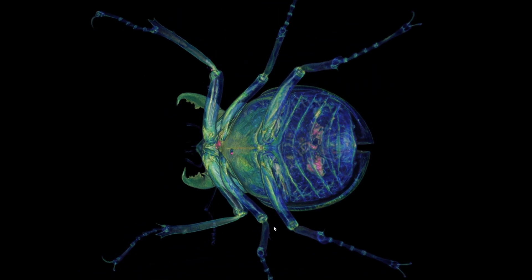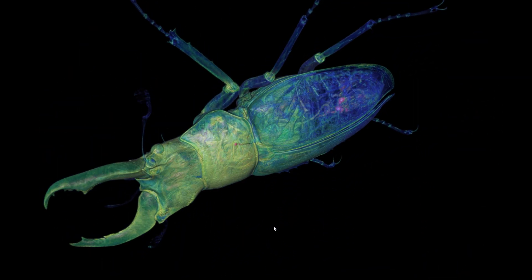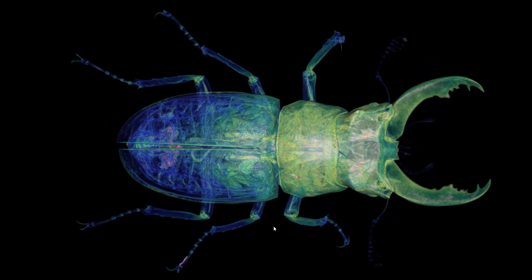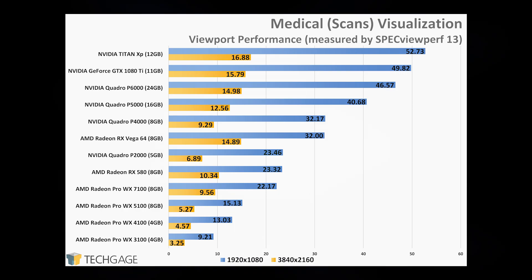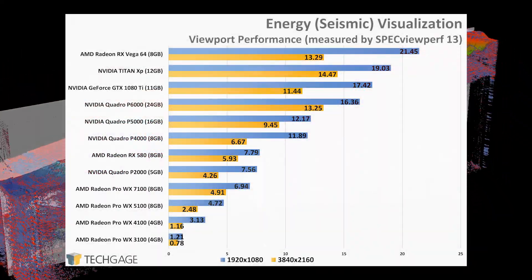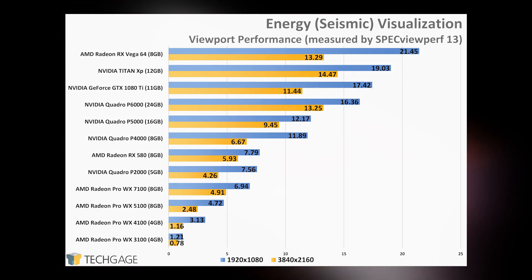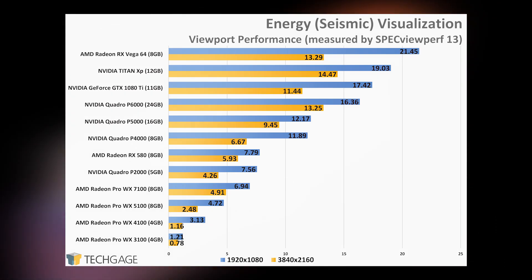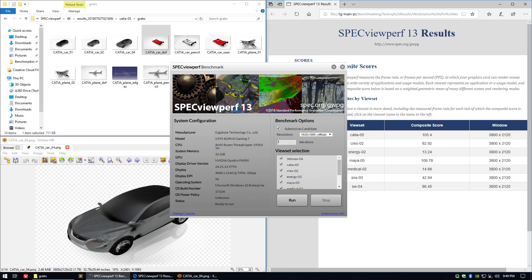Now for something a little different. The final two tests cater to visualization software used by researchers, doctors, and others to interpret mass amounts of data gathered through many different techniques. The amount of data being churned through to generate accurate visualization on screen is immense. The medical test follows the 3ds Max and Maya ones nicely by scaling almost identically — NVIDIA is on top, and once again sees its lower-end Quadros outperforming the entire AMD stack we have on hand. The Quadro P4000 and Vega 64 perform similarly, with the Polaris-based Radeons falling behind most of NVIDIA. Thankfully, the energy results give us something interesting — AMD's RX Vega 64 dominates. The Titan XP's 12GB of memory seems to gain it a bit of an advantage at 4K, but overall the Vega 64 performs exceptionally well in comparison.